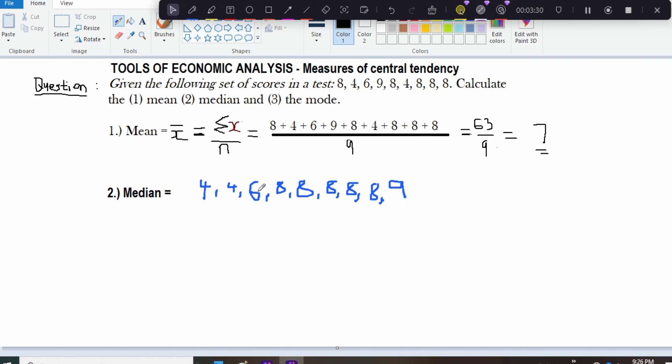So we have 4, 4, 6, 8, 8, 8, 8, 8, 8 and 9. Now what is the middle number here? You can see that there are 9 items and 9 happens to be an odd number. So that helps us to get the middle value easily.